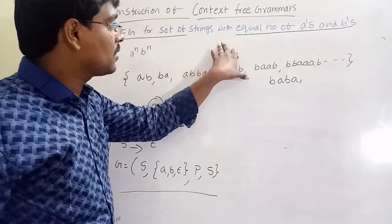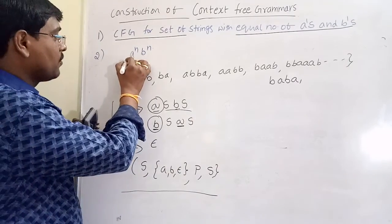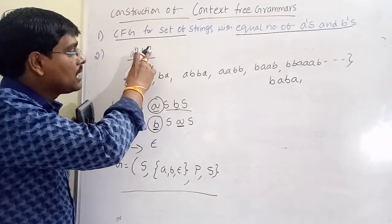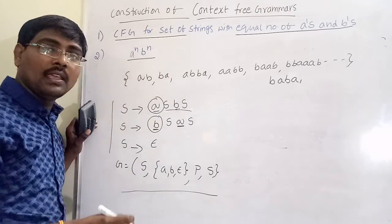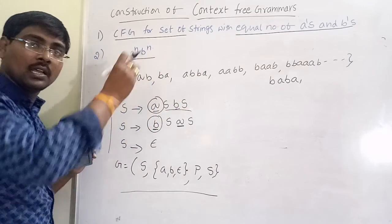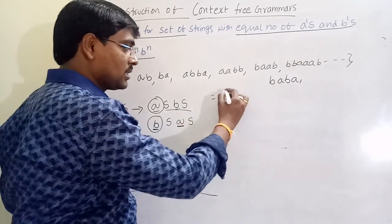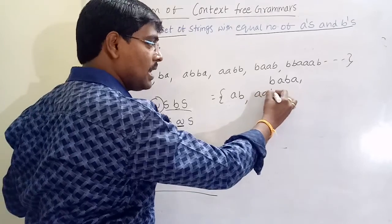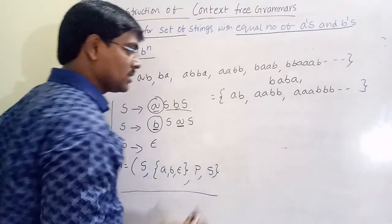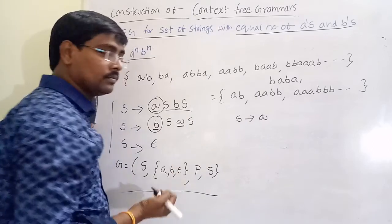The second question: construct the context free grammar for the set of strings with equal number of a's and b's of the form aⁿbⁿ — that is, the number of a's are followed by the number of b's. Here the a's are followed by the b's. Possible strings: ab, aabb, aaabbb, and so on.